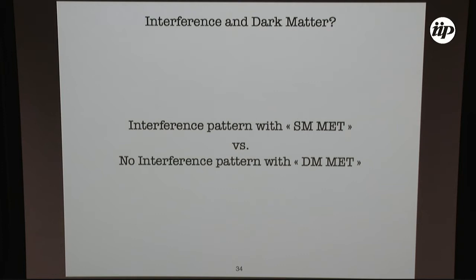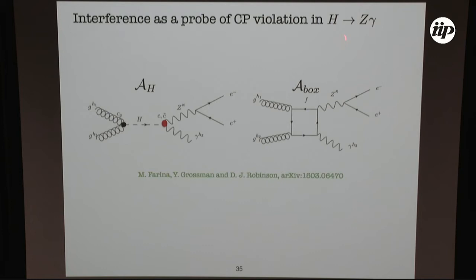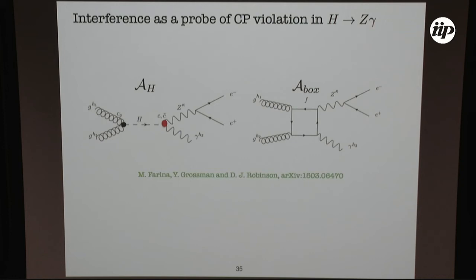An even more speculative idea: I've never heard of any link between dark matter and interference. If you have a Standard Model mediator you would expect some interference effects, but if you have dark matter in the final state it would not interfere at all with the Standard Model background — this could potentially be a discriminating observable. Finally, one paper proposes measuring CP violation by measuring interference effects through the backward-forward asymmetry: if you introduce a CP-violating coupling, the diagram for Higgs decaying to Zγ will interfere with the box diagram, and by measuring this interference you can access CP violation in the Standard Model. These are all open topics for discussion.